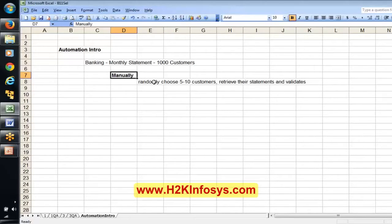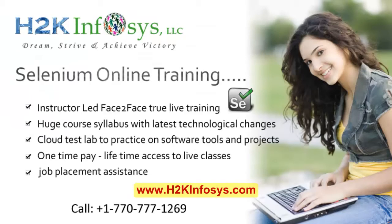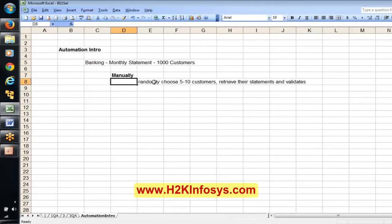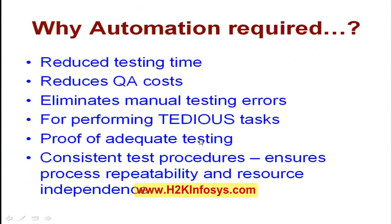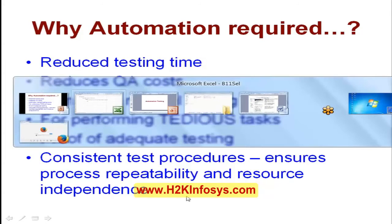But if you write an automation script, you can execute it for all 1000 customers. Say in the future after 3 months we have 2000 customers — our automation script still supports those 2000 customers. So by using automation testing we can execute the script against all customers' monthly statements, which increases confidence in the application. Consistent test procedures ensure process repeatability and resource independence.